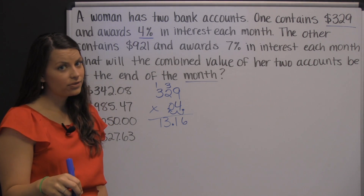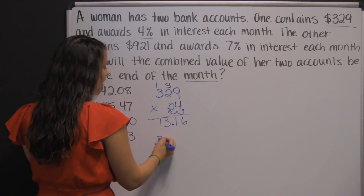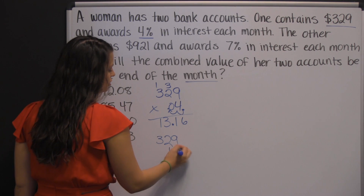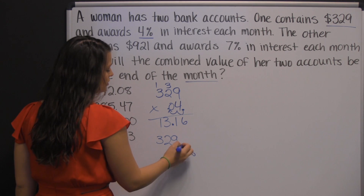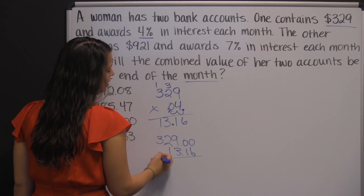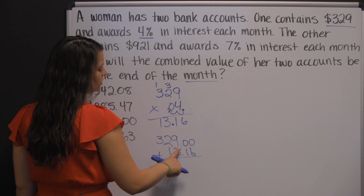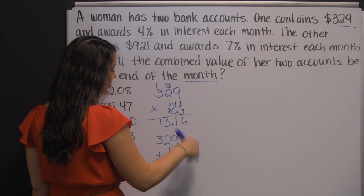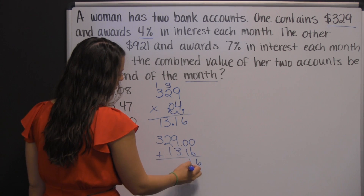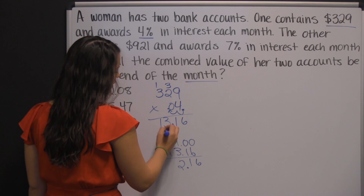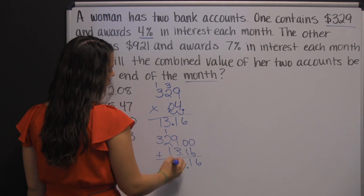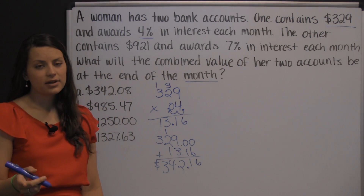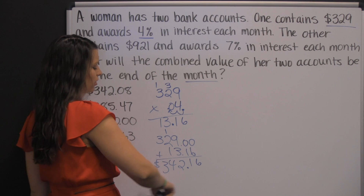To find the total that she has in that account, you need to add how much she deposited and the interest she earned. When adding with decimals, you have to line them up. You can add a decimal at the end of $329 and put two zeros, so you can line it up with $13.16. Now we just add: 6, 1, bring your decimal down. 9, 10, 11, 12, carry your 1. 1, 2, 3, 4. So that's account 1. In account 1, at the end of the month, she had $342.16.